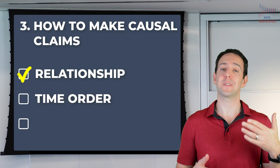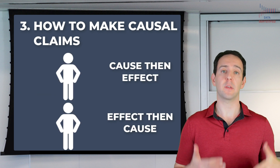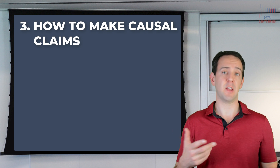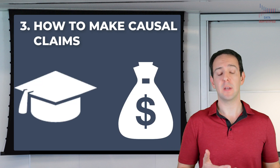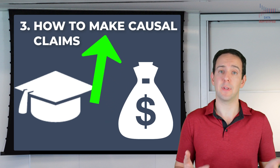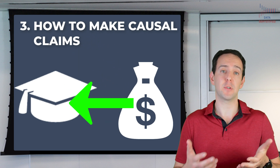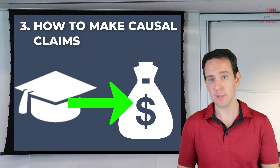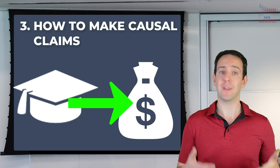Second, you need what's called time order. Whatever you think is your cause has to actually happen before the outcome. If I observe that education and income are correlated, it's possible that education is what causes higher incomes. But it's also possible that as I earn more money, I have more opportunities to go back to school. In other words, to make the claim that education causes income, I have to be sure that education happens first and income follows. If the opposite is possibly true, then I've violated time order and can't make a causal claim.